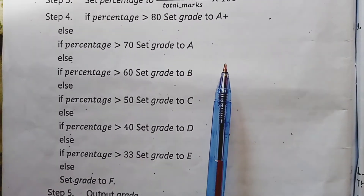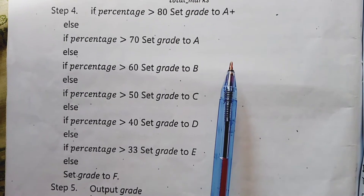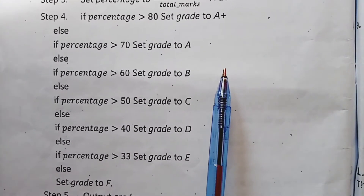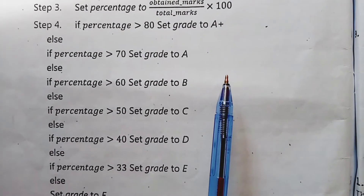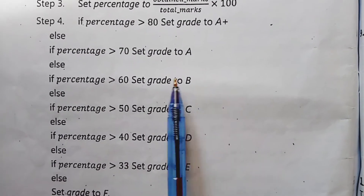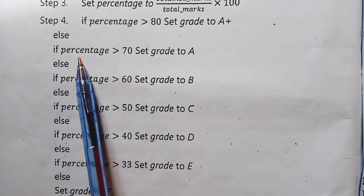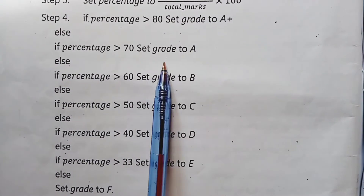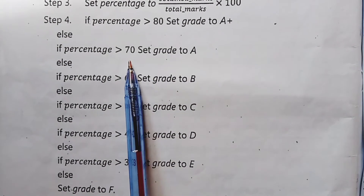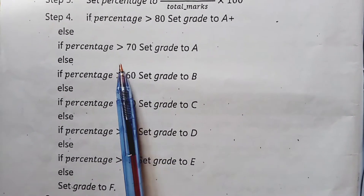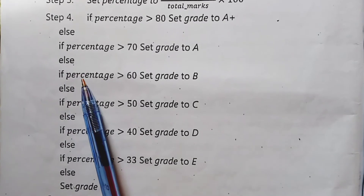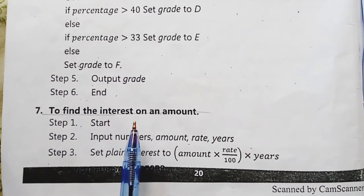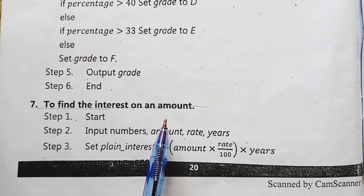Students, we have discussed the keywords of an algorithm. We have discussed the use of the IF-ELSE keyword to check conditions: if the condition is true, the true path is followed; if the condition is false, the false path is followed.